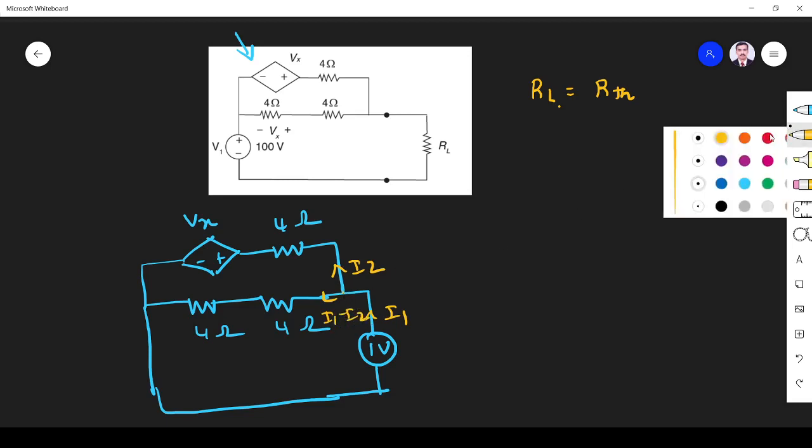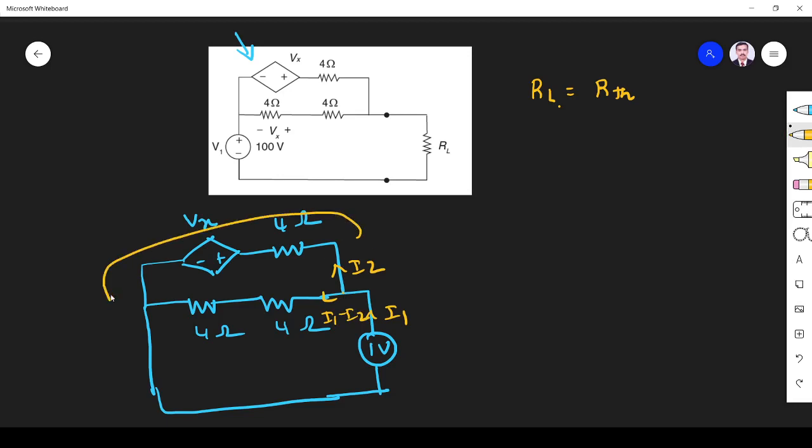So from this branch I understand what is I2. I2 is in this 1 volt. So here also 1 volt. So 1 minus Vx divided by 4. I2 is 1 minus Vx divided by 4.